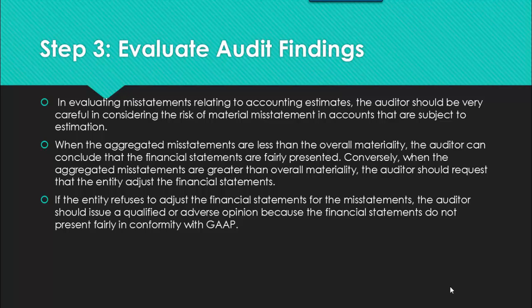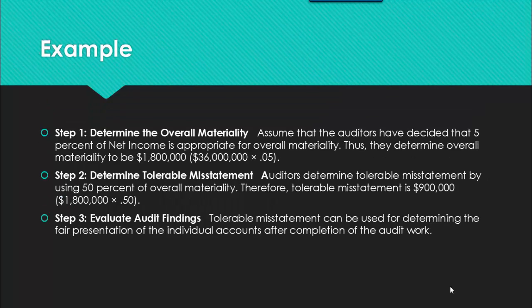The next step is to evaluate the results. In evaluating misstatements related to account estimates, the auditor should be very careful in considering the risk of material misstatement, especially related to those accounts subject to estimates. When the aggregate misstatements are less than the overall materiality, the auditor can conclude that the financial statements are fairly presented. Conversely, when the aggregate is greater than the overall materiality, the auditor should request that the entity adjust the financial statements. If the entity refuses, the auditor should issue a qualified or an adverse opinion because the financial statements do not present fairly in conformity with GAAP.